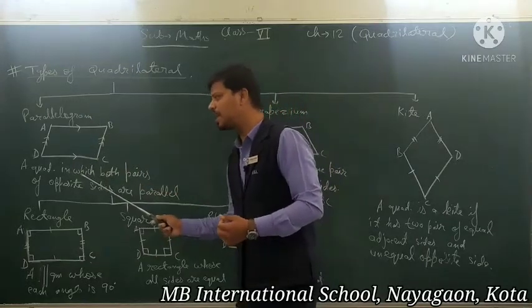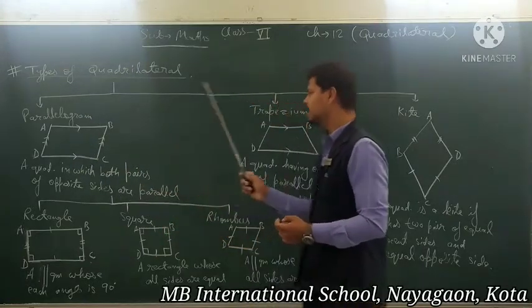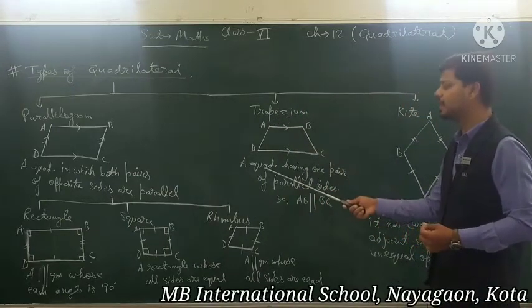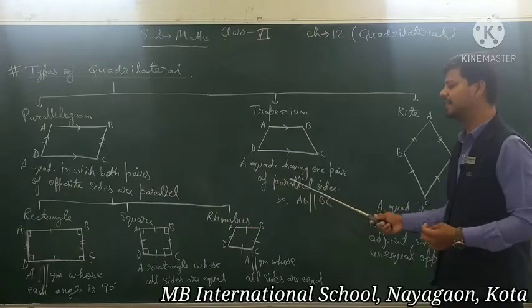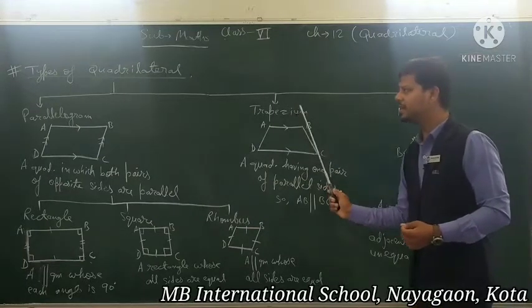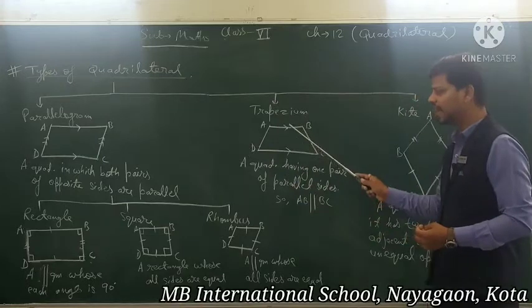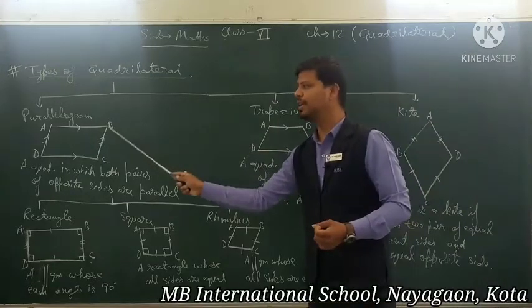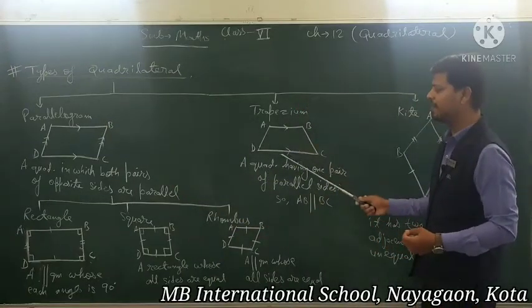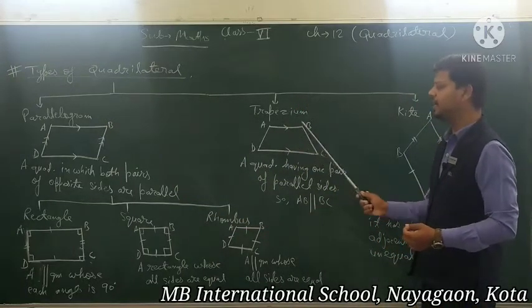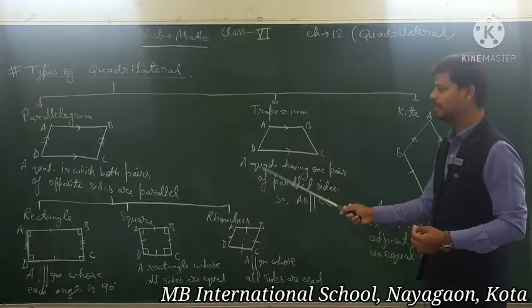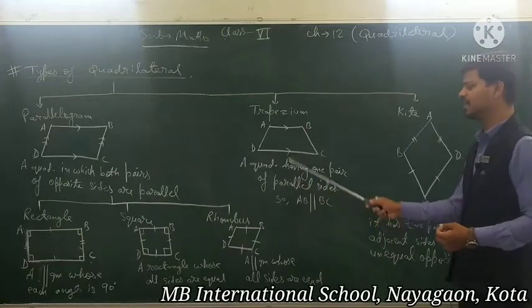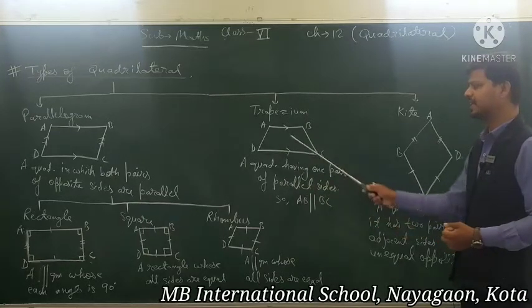Now the second type of quadrilateral is a trapezium. Trapezium is a quadrilateral having one pair of parallel sides. A trapezium is a quadrilateral in which only one pair of opposite sides is parallel. In a parallelogram, both pairs were parallel, but in a trapezium, only one pair of opposite sides is parallel, that is AB is parallel to DC.